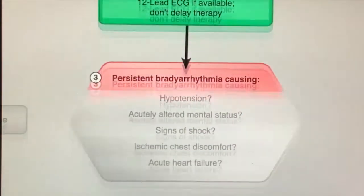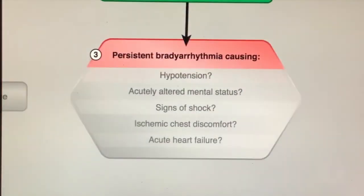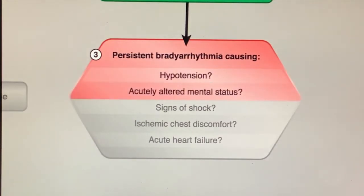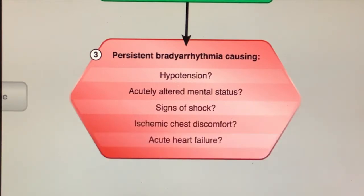The primary decision point in the algorithm is determining whether the bradycardia is causing the patient's signs and symptoms, or some other illness is causing the bradycardia. These symptoms include hypotension, acutely altered mental status, signs of shock, ischemic chest discomfort, and acute heart failure.